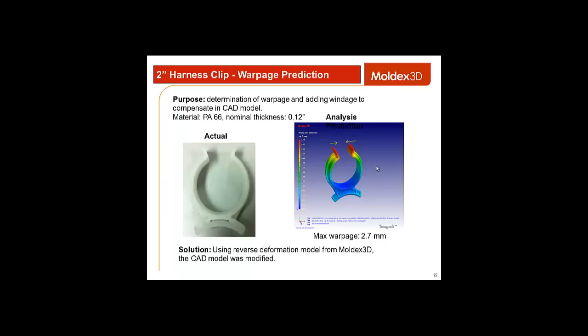Here is an example of a company using Moldex 3D to predict warpage. After simulating the warpage tendency and volume, we added windage to compensate in the CAD model. In this case, we were able to improve the part quality by predicting the warpage and compensating for it.